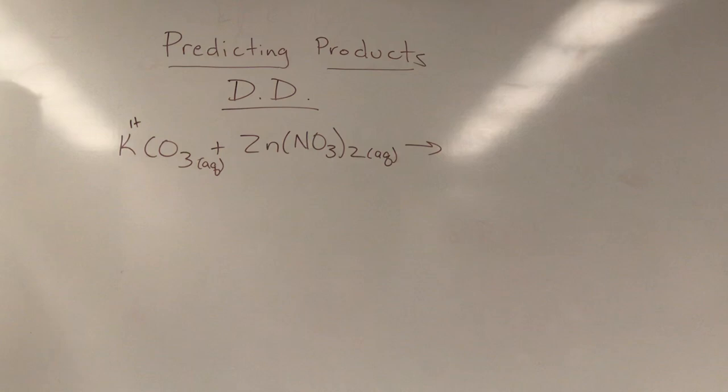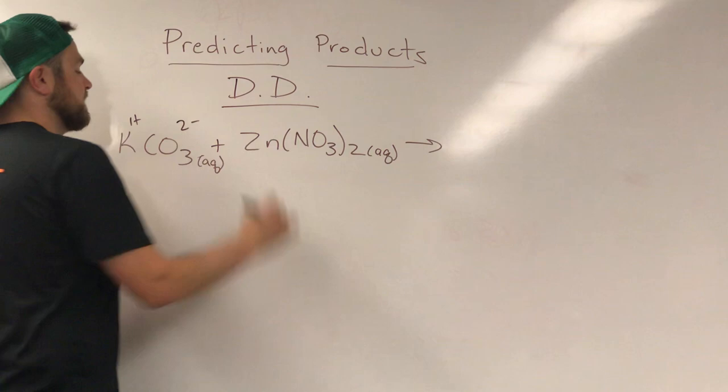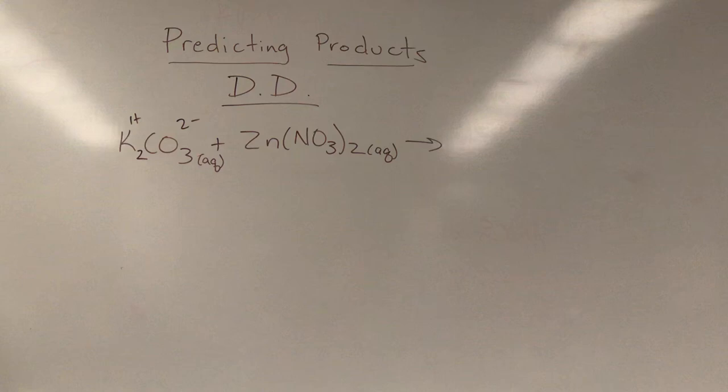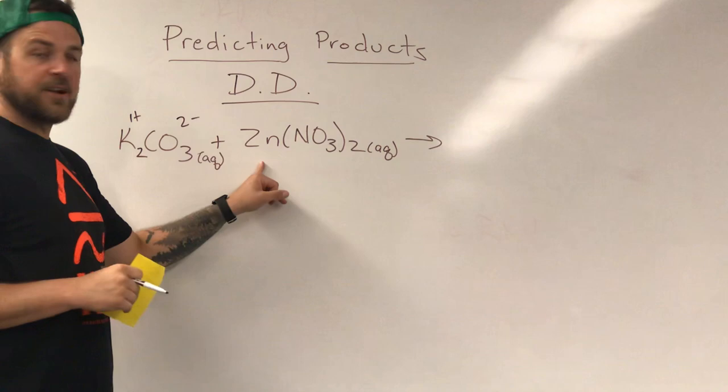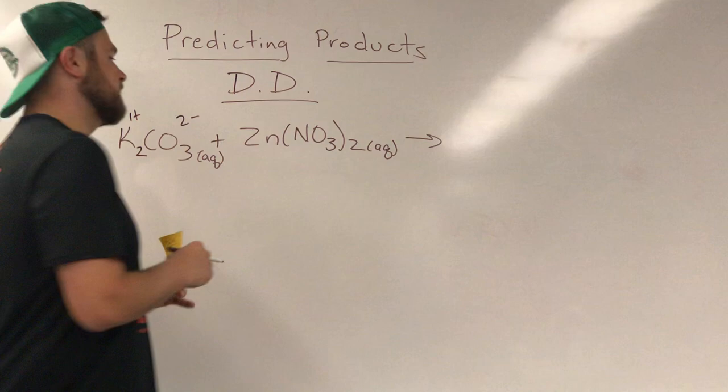I know that potassium always has a plus one charge. I also know that if I look at my red sheet, carbonate CO3 always has a two minus, which is proof that I just messed up that formula. There we go. Carbonate always has a two minus charge. Zinc I don't know - it's a transition metal, it can change.